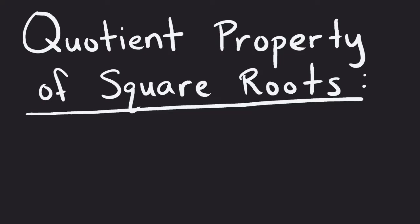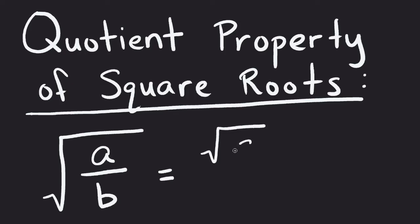The quotient property of square roots says that if we had a square root with a quotient underneath it, we are allowed to take that quotient and break it up into its two individual square roots. So I can break it up into its numerator and its denominator and look at those pieces independently of each other.